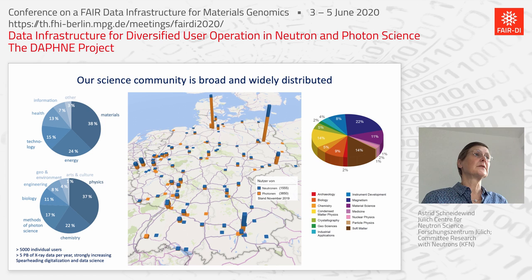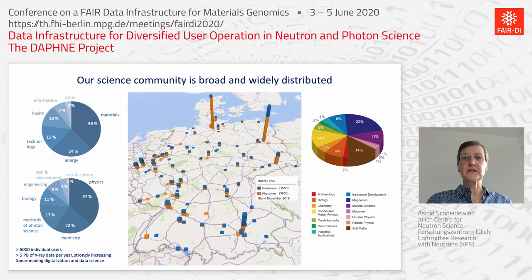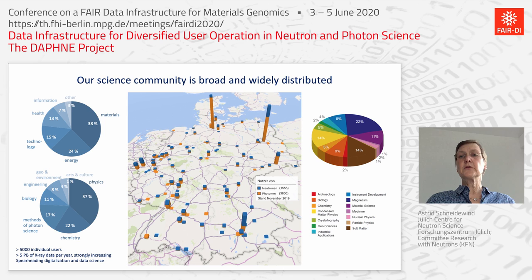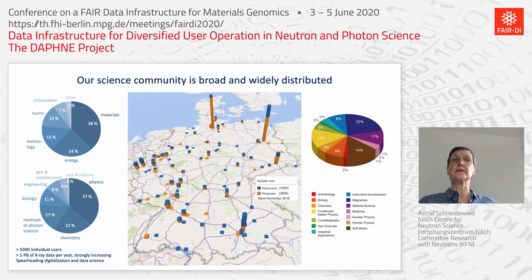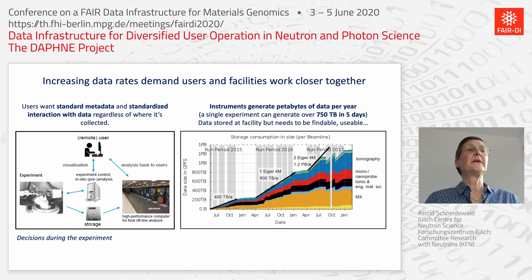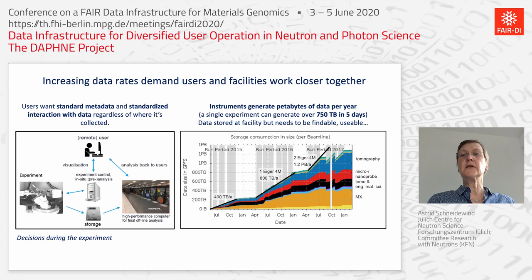A second point asking us to improve our data processing and management is the strong increase in the amount of data we can collect in a short time, driven by developments in detectors, data collection techniques, and scattering techniques. At the moment we are at roughly five petabytes per year — not only synchrotrons but driven by them, with neutrons following immediately with new measuring stations. This large amount of data and the continuing increase asks for new approaches to data evaluation and data storage.